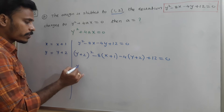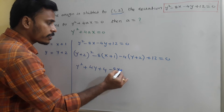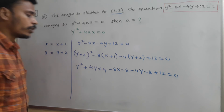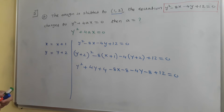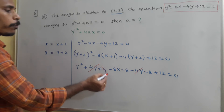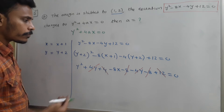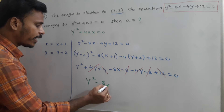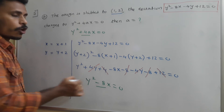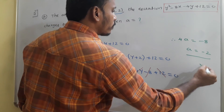Expanding: Y squared plus 4Y plus 4 minus 8X minus 8 minus 4Y minus 8 plus 12 equals 0. The 4Y and minus 4Y cancel. Then 4 plus 12 minus 8 minus 8 gives 0, so the constants cancel. We are left with Y squared minus 8X equals 0. Comparing with y squared plus 4ax equals 0, the coefficient of X is 4a, and here it is minus 8. Therefore 4a equals minus 8 and a equals minus 2.